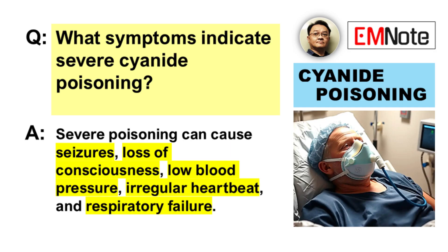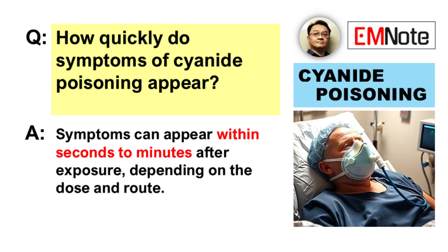And what signs point to more severe poisoning? Severe cyanide toxicity can manifest as hypotension, bradyarrhythmias or tachyarrhythmias, seizures, loss of consciousness, and respiratory arrest. How quickly do these symptoms develop? Onset can be within seconds to minutes, particularly with inhalational exposure. It depends on the route, concentration, and duration of exposure.